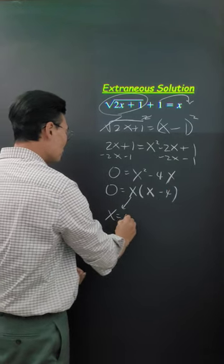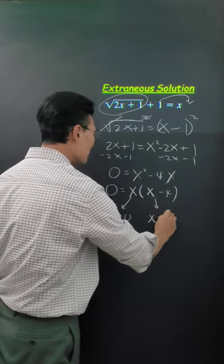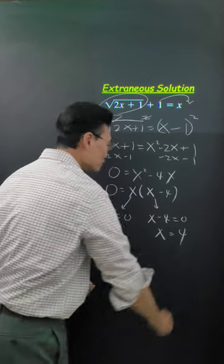From this, we get x equals 0. From this, we get x minus 4 equals 0, or x equals 4.